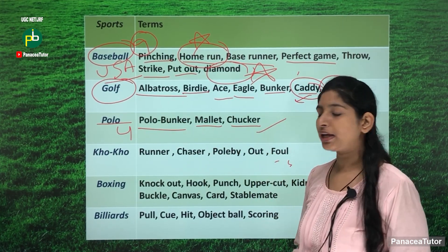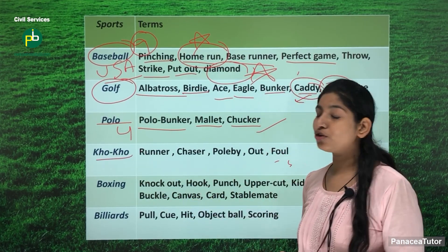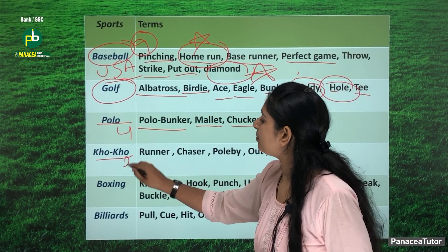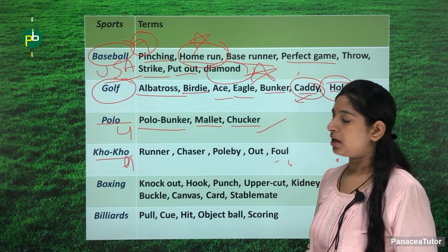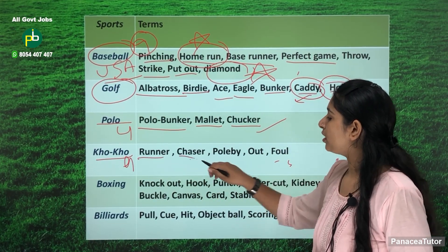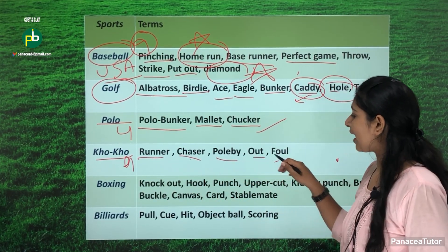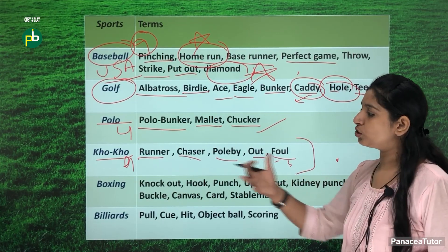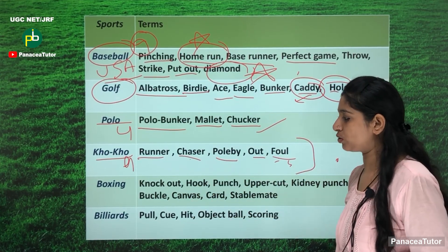The next sport is kho kho. How many players are in one team? In one team there are nine players. Some terms related to kho kho are runner, chaser, pole by, out and foul. These are easy terms related to kho kho.